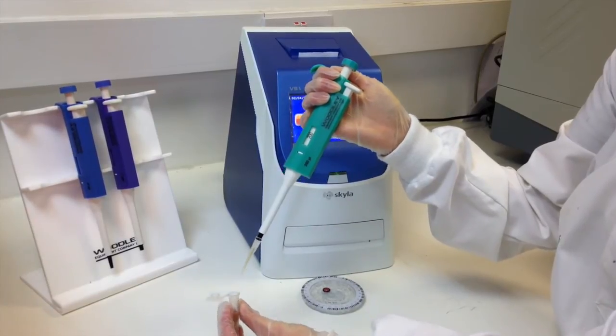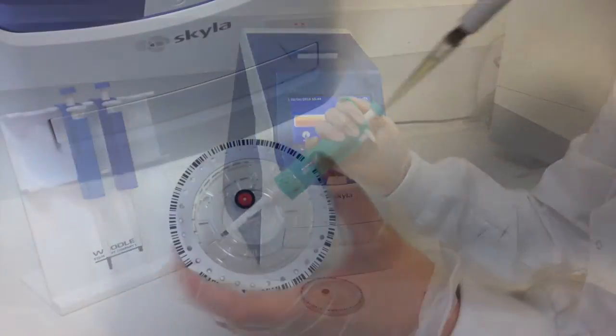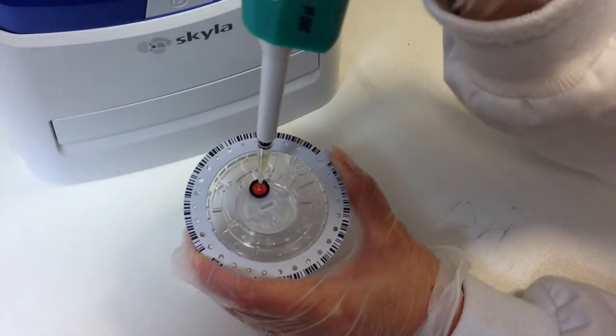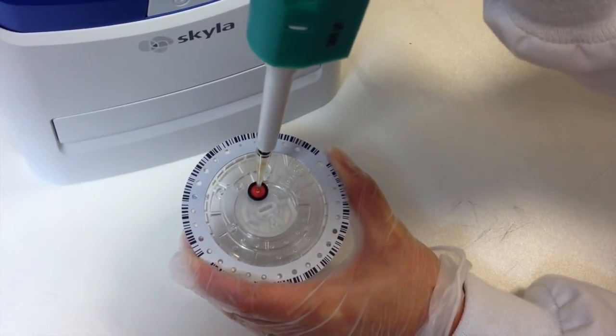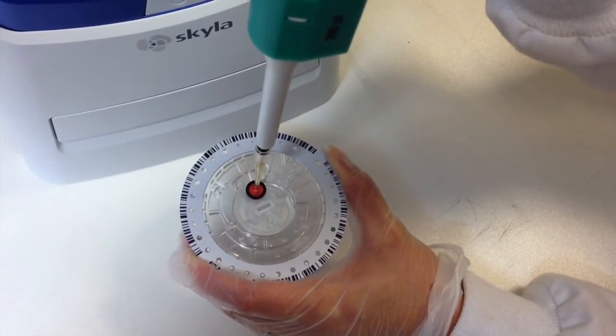With your thumb fully off the plunger, remove the pipette from the sample tube. Insert the pipette tip into the sample port on the rotor. The pipette tip should only make slight contact with the bottom of the sample chamber. Do not push down hard.